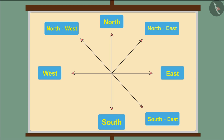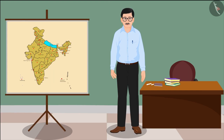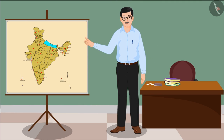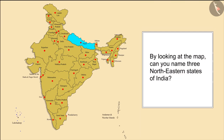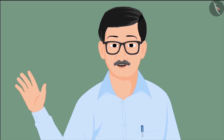And the direction between south and west is called southwest. So children, that's all in today's video. But before I go, I will leave you with a question: by looking at the map, can you name three northeastern states of India? Bye friends!